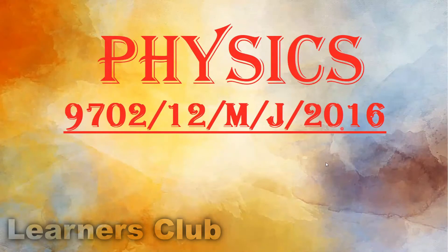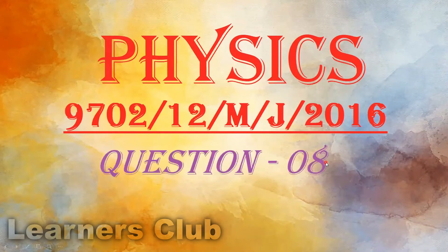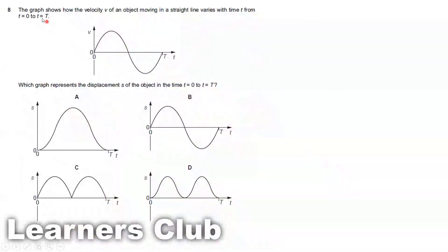Physics 2016, Question 8. The graph shows how the velocity v of an object moving in a straight line varies with time t from 0 to T. Which graph represents the displacement of the object in the time interval t equals 0 to T?